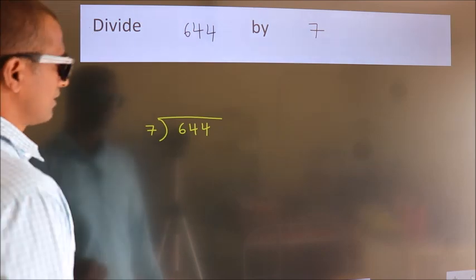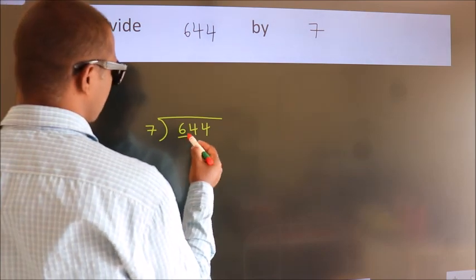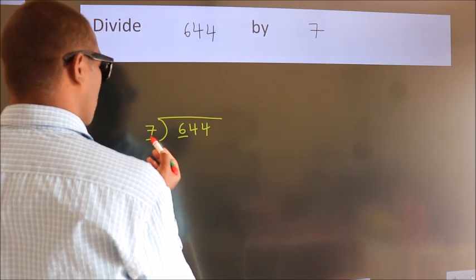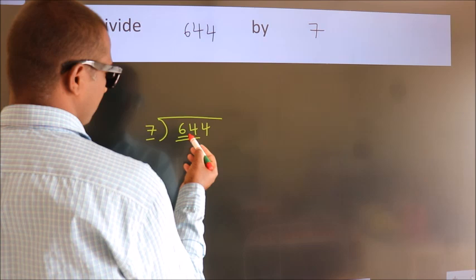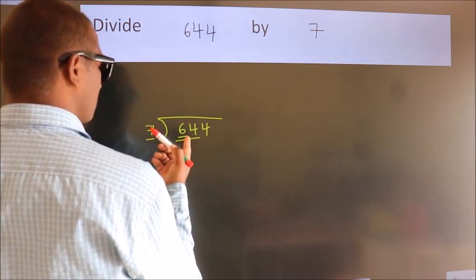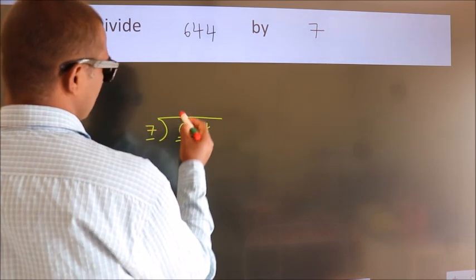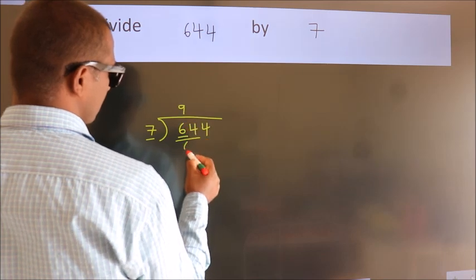Next. Here we have 6, here 7. 6 smaller than 7. So we should take two numbers, 64. A number close to 64 in 7 table is 7 nines, 63.